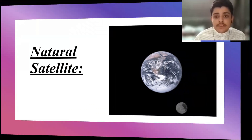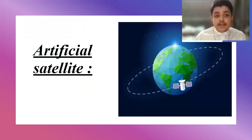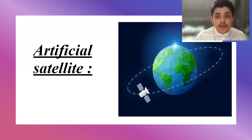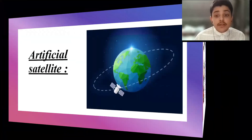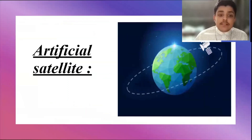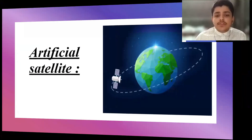The second type, as you can see in the next slide, is an artificial satellite. This is a man-made machine that revolves around a particular planet in a fixed orbit. We utilize artificial satellites for various reasons like navigation, communication, earth observation, and more.